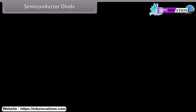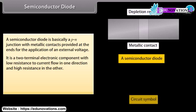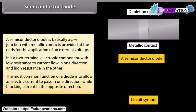A semiconductor diode is basically a P-N junction with metallic contacts provided at the ends for the application of an external voltage. It is a two-terminal device. The arrowhead corresponds to the P-type terminal and points in the direction of easy current flow. It is a two-terminal electronic component with low resistance to current flow in one direction and high resistance in the other. The most common function of a diode is to allow electric current to pass in one direction while blocking current in the opposite direction.